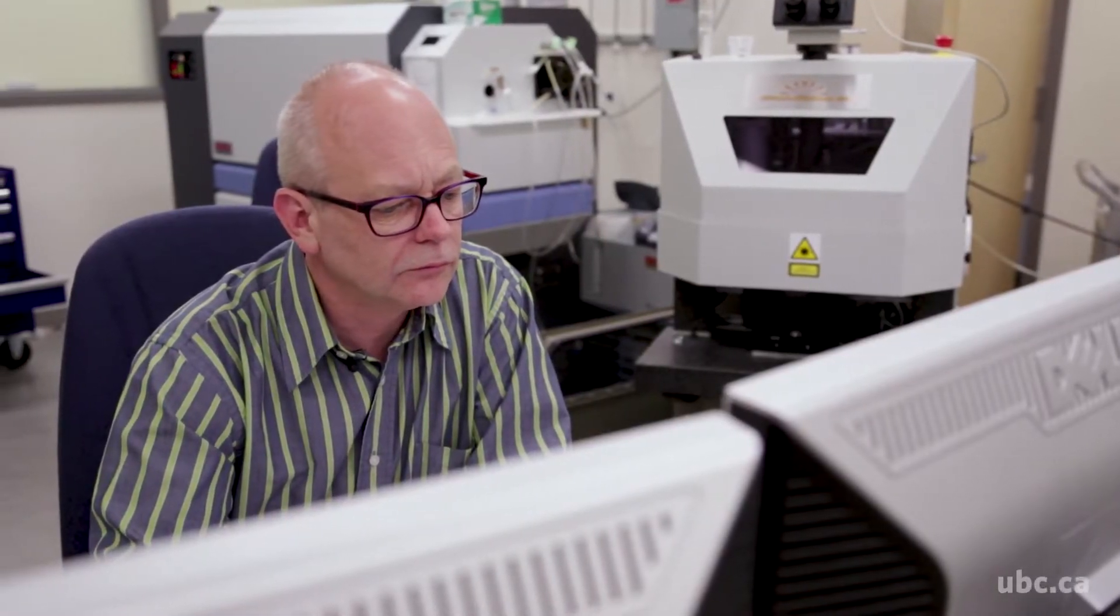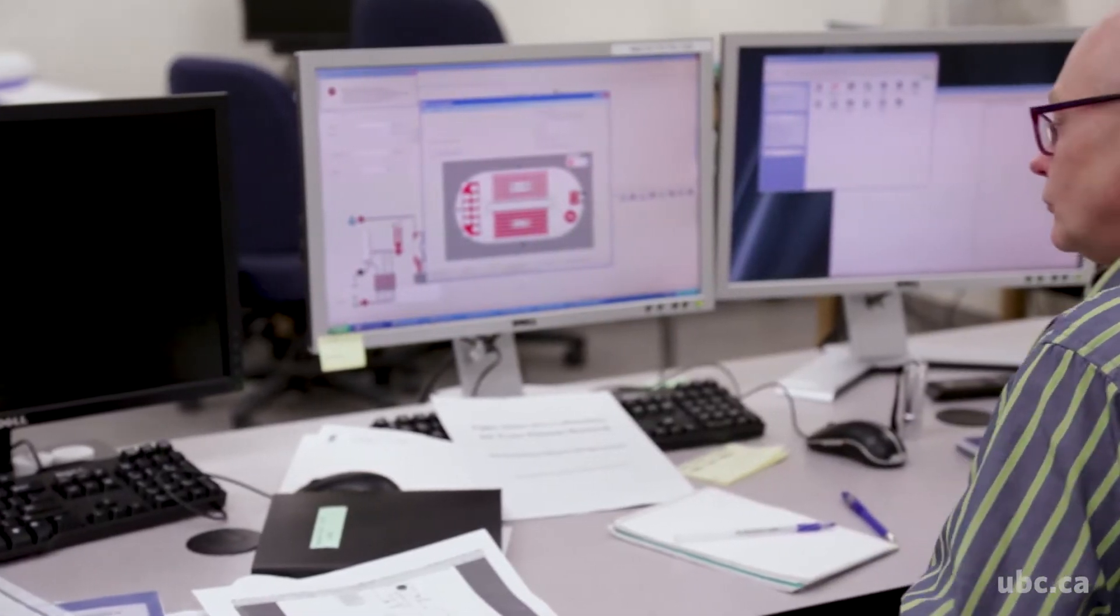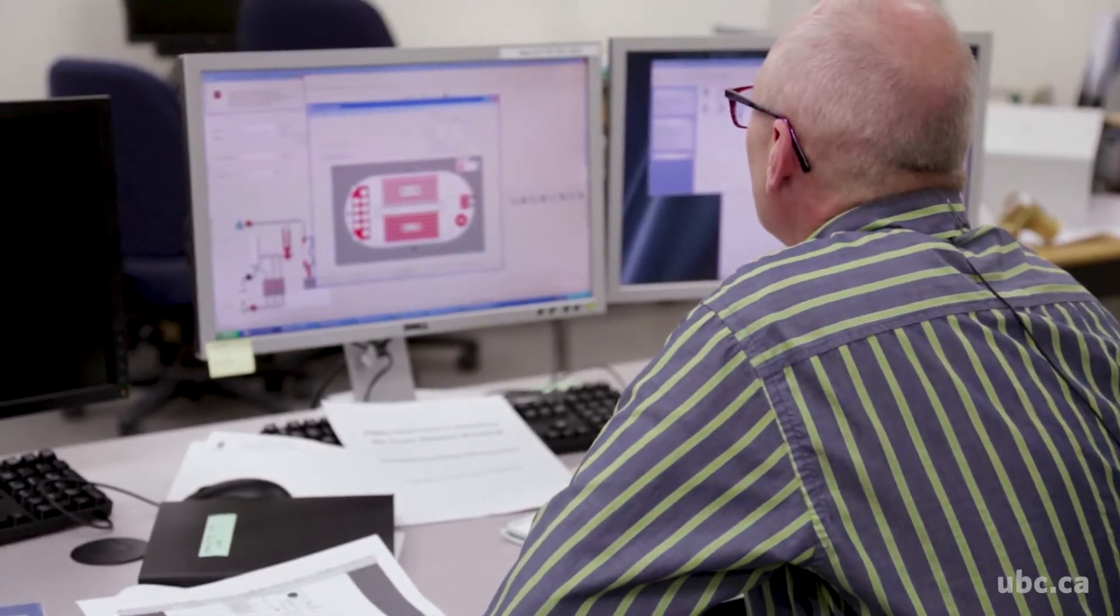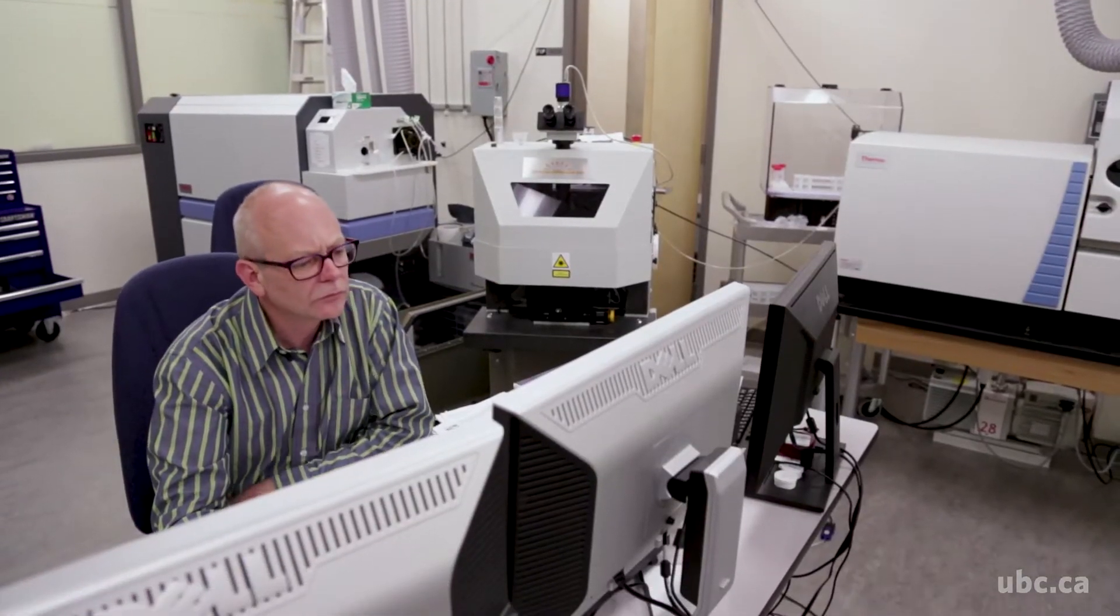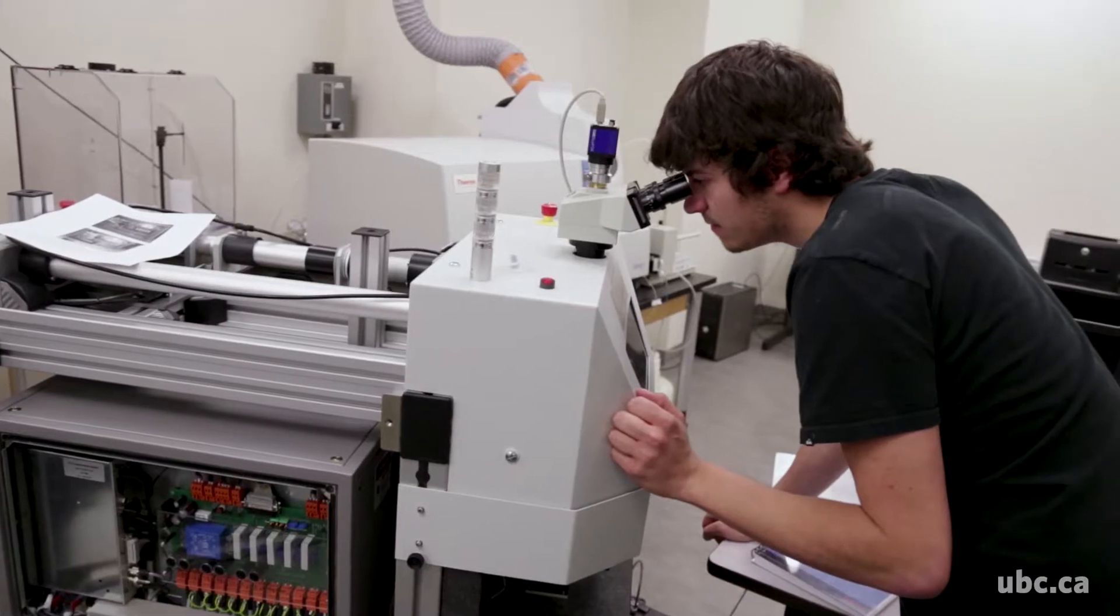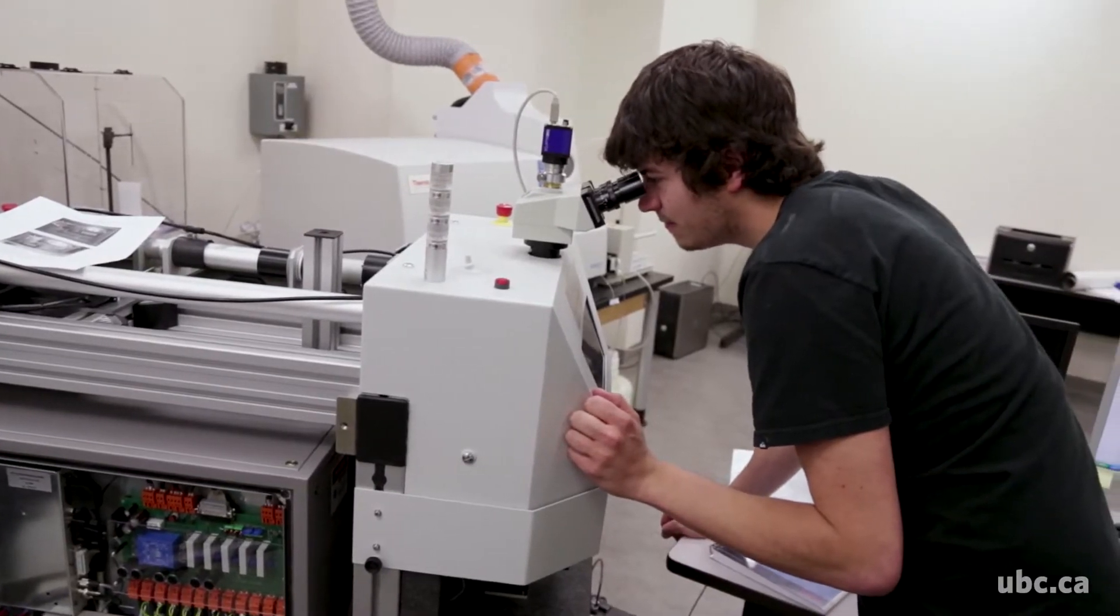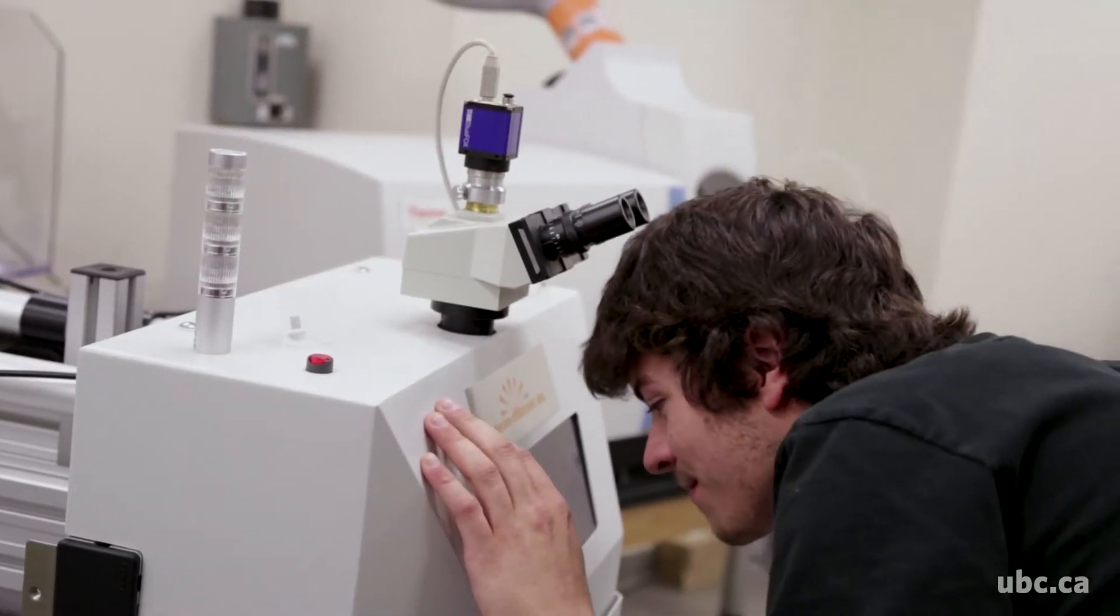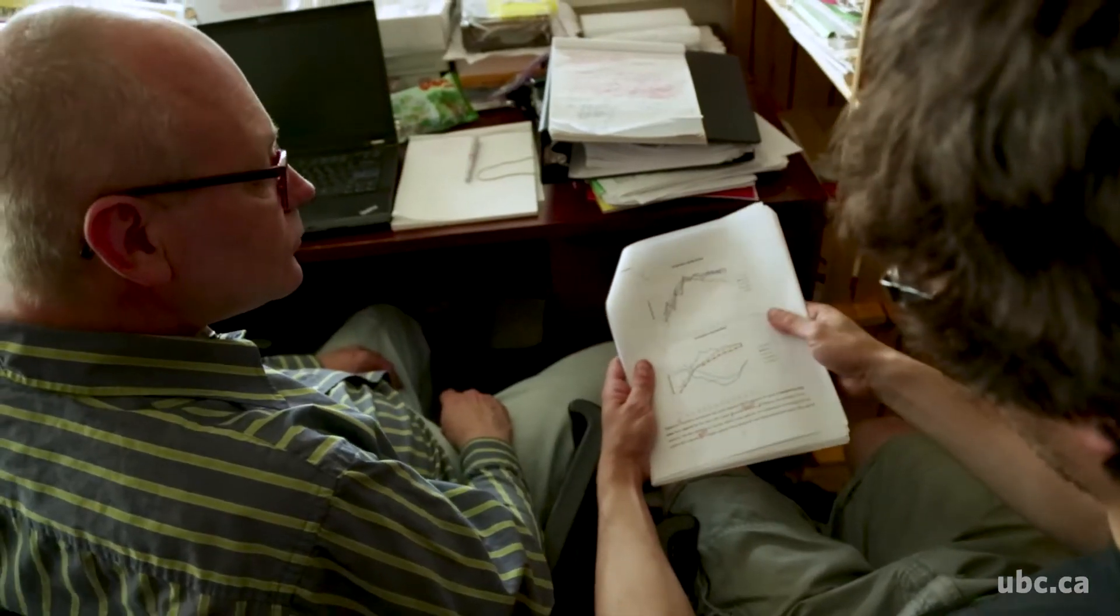We use an EDX detector on this scanning electron microscope to determine major element concentrations in mineral grains. Then we take that data and work in the other part of the filter lab where the inductively coupled plasma mass spectrometer is to get trace element data on minerals that we've analyzed in the SEM lab.